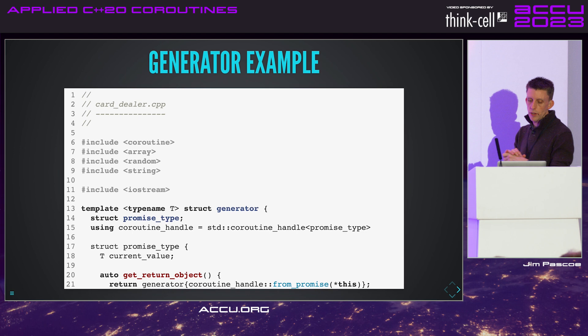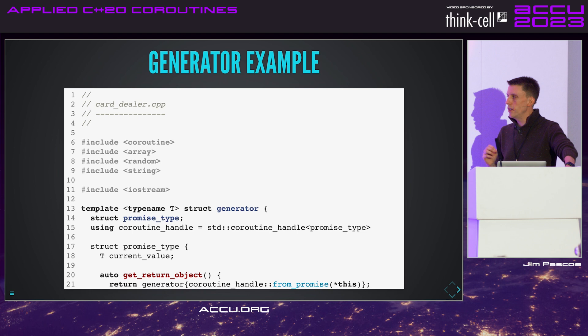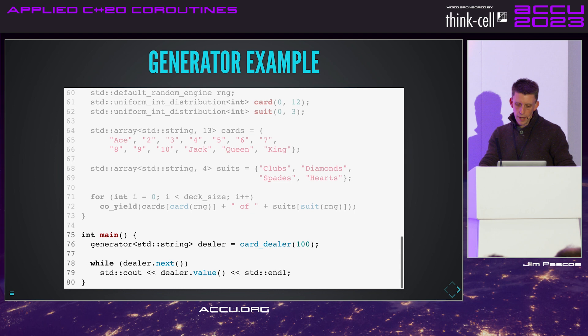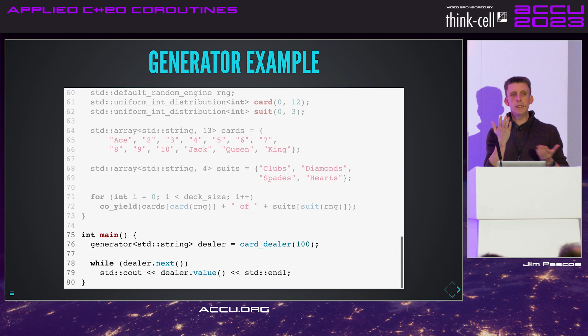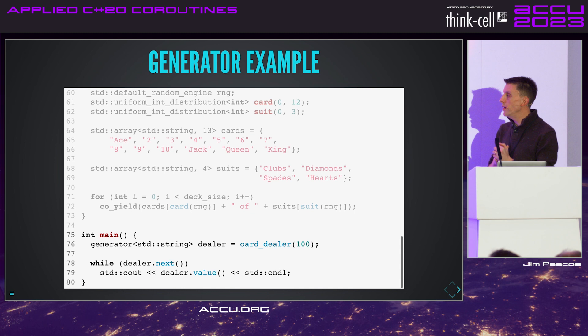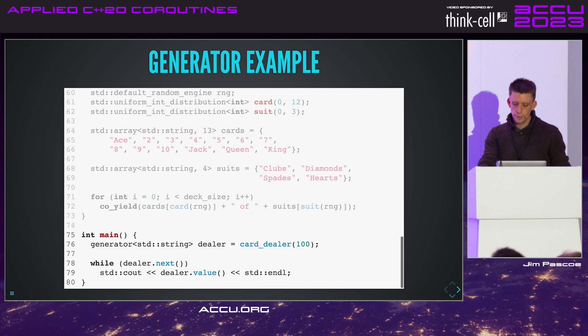Here's an example — a fun generator. This is a virtual card dealer — you could use it after the conference dinner. At the bottom we have the generator return type: generator<std::string>. This is entirely generic — effectively what we'll get with std::generator, which has been approved for C++23 but has no implementations in mainline standard libraries yet. Generator is defined in the standard library; card_dealer is the specific coroutine use case; and lines 78-79 are the application that uses it.